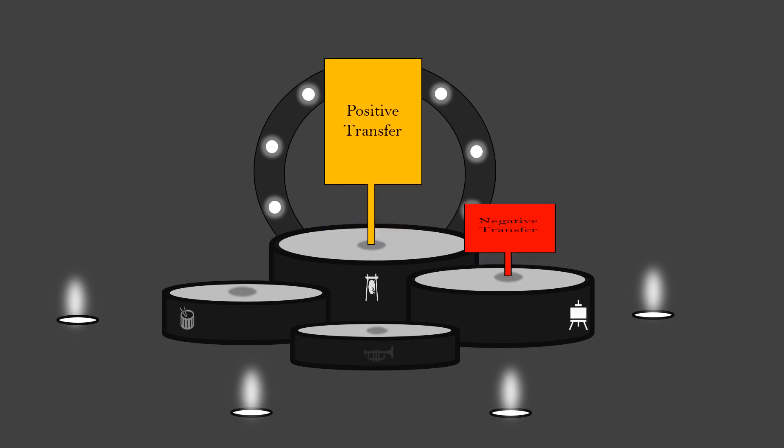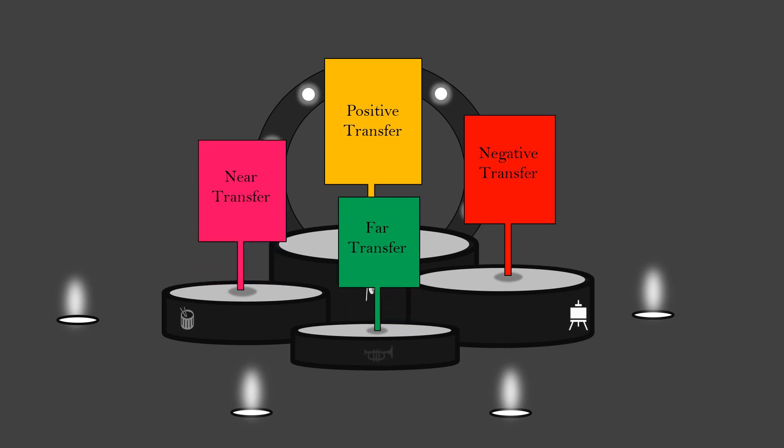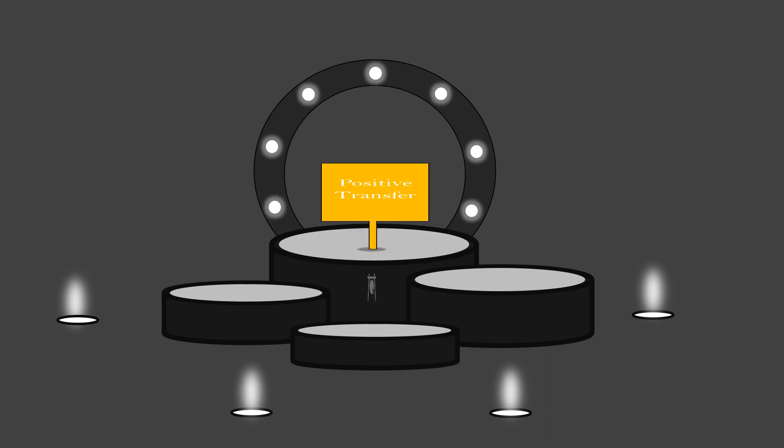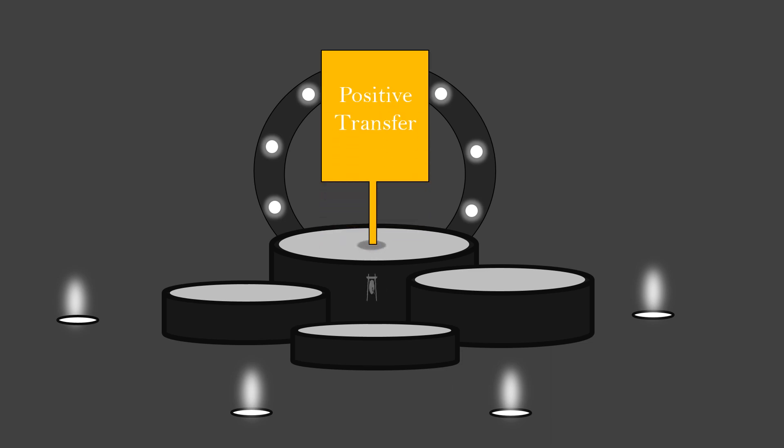Positive transfer, negative transfer, near transfer, and far transfer. First one is positive transfer. We learn things that are related to each other. When you try to learn something from one context, you'll be able to learn another task that is related to it.